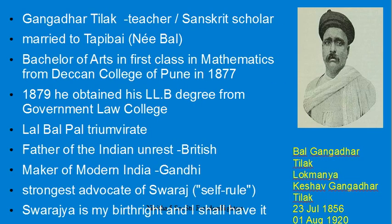Another important freedom fighter is Bal Gangadhar Tilak. He was born in July 1856 and lived up to August 1920, about 70 years. Bal Gangadhar Tilak was also called Lokamanya. His given name was Keshav Gangadhar Tilak. He married Tapibai and his father Gangadhar Tilak was a Sanskrit scholar.